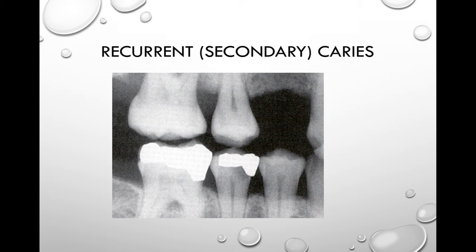Another way to classify caries is as recurrent or secondary caries. This occurs adjacent to or under an existing restoration. Caries lesions on the proximal and occlusal margins of restorations are easier to identify with radiographs because the x-ray can see underneath those restorations. They appear as a radiolucent area just beneath the margins. Here on tooth number 29, I can see recurrent caries — there is an MO amalgam with a radiolucent area underneath it.